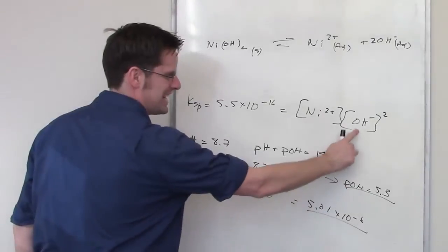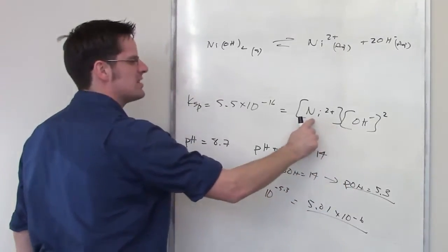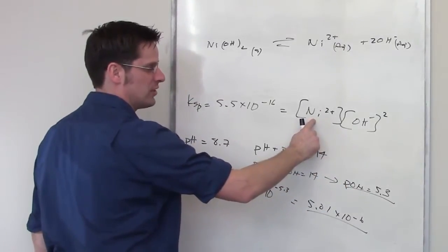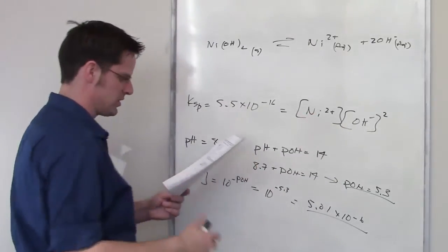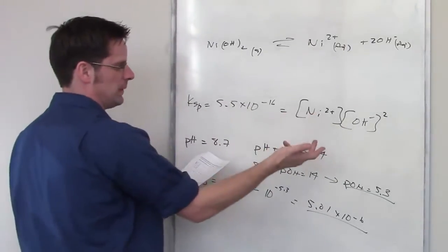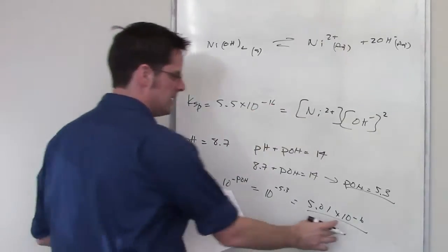So all I have to do is throw that number in here, and then solve for nickel 2+. I solve for nickel 2+. That is answering the question, because the question is asking me how much nickel 2+ do I need in order to get precipitation to occur. So let's go ahead and do that.